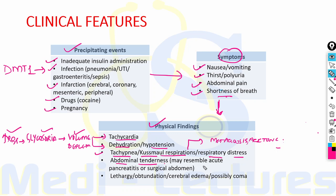The patient can also be in respiratory distress, and abdominal tenderness may resemble acute pancreatitis or surgical abdomen. There can be lethargy, obtundation, cerebral edema, and possibly coma. Cerebral edema is an extremely serious complication of DKA, most commonly seen in children, due to over-replacement of free water and rapid correction of serum glucose. Therefore, over-replacement of free water and rapid correction should be avoided, especially in children.